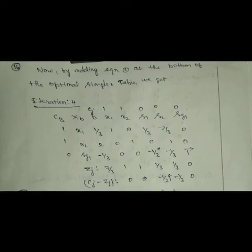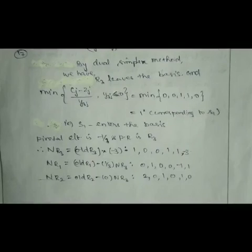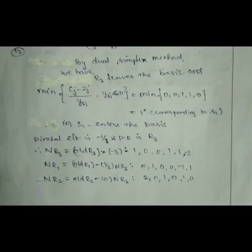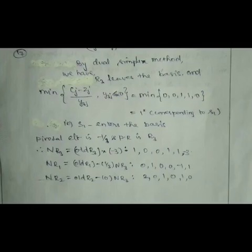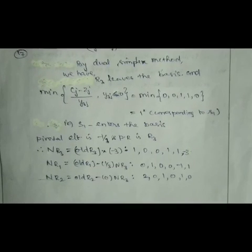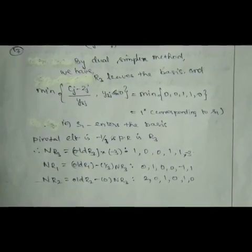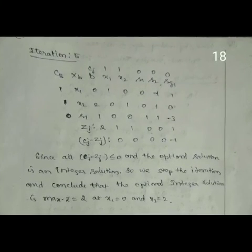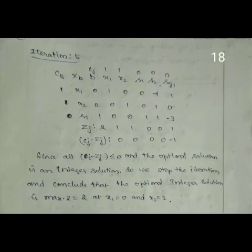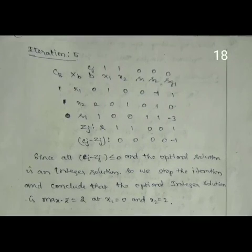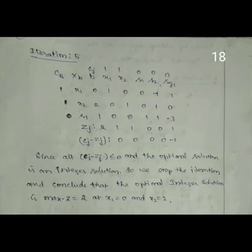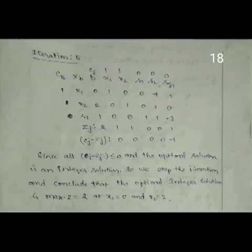By adding the Gomory's Cut constraint to the bottom of the optimal simplex table, we get a new simplex table shown in iteration 4. Using the dual simplex method, x1 is selected as the entering basis variable using the minimum ratio formula (cj minus zj divided by y3j for which y3j is strictly less than 0), and sg1 is the leaving basis variable. The pivotal element is −1/3 and r3 is the pivotal row; nr1, nr2, and nr3 are calculated as usual. In the fifth iteration, all cj minus zj are less than or equal to 0, so the optimal integer solution is obtained. Therefore, the optimal integer solution is: maximize z equal to 2, when x1 equal to 0 and x2 equal to 2.